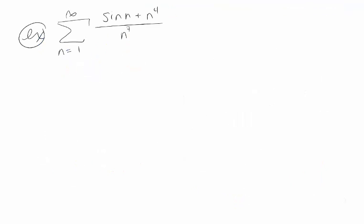Let's do one last, somewhat tricky example: (sin n + n^4) / n^7. I know the terms are positive because even though sine can be positive or negative, it gets added to n^4 which is way bigger — so even if sine is close to −1, we're adding it to a large positive number. That lets us use all the tests we want. When n gets really large, the sine term probably won't matter much, so this will look like n^4/n^7 = 1/n^3, and by the p-test that sum converges.